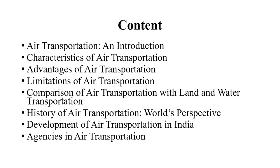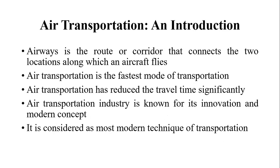Airways, or airway, is the route or corridor that connects two locations along which an aircraft flies. In transportation engineering there are two components: the vehicle and the way or corridor. In highway, the pavement is the way; in railway, the rails are the way and the vehicle is the train. In airway, the air space is the way and the vehicle is the aircraft. Air transportation is the fastest and most modern mode of transportation, significantly reducing travel time.